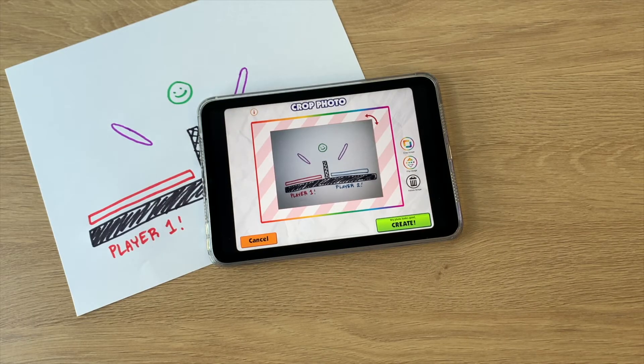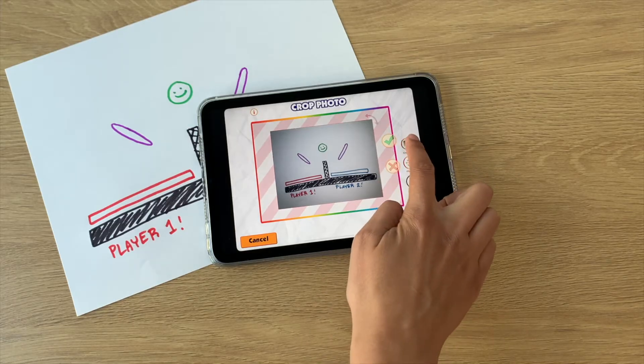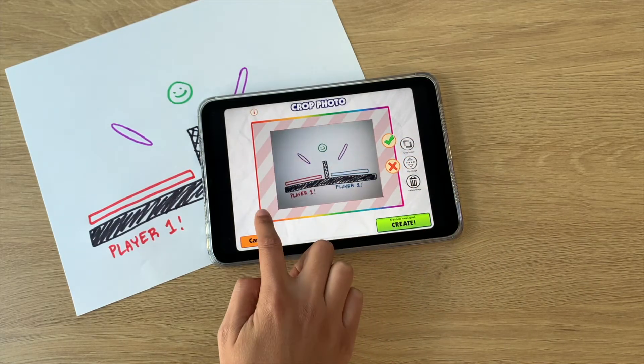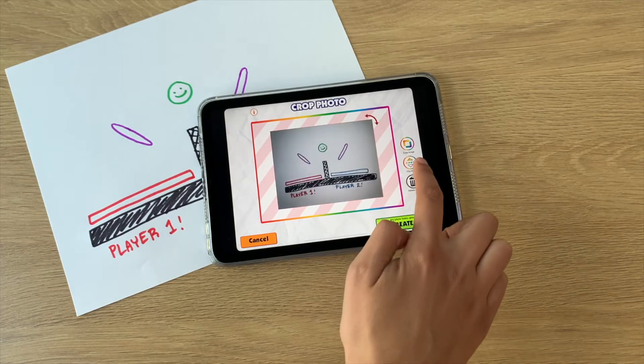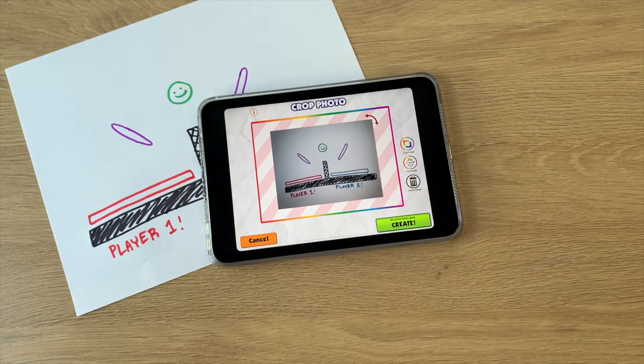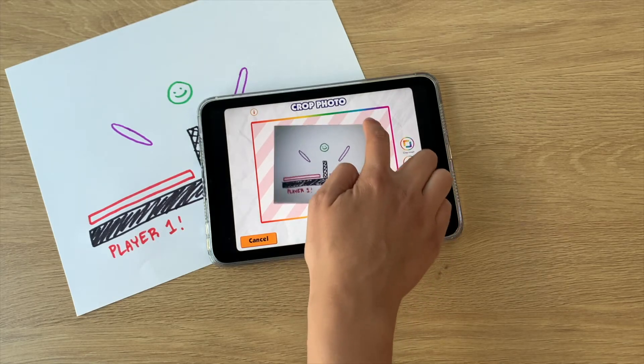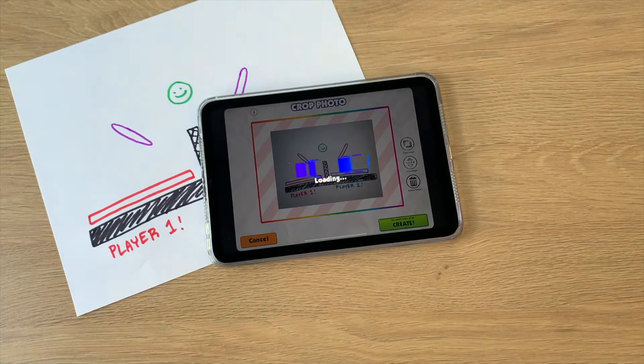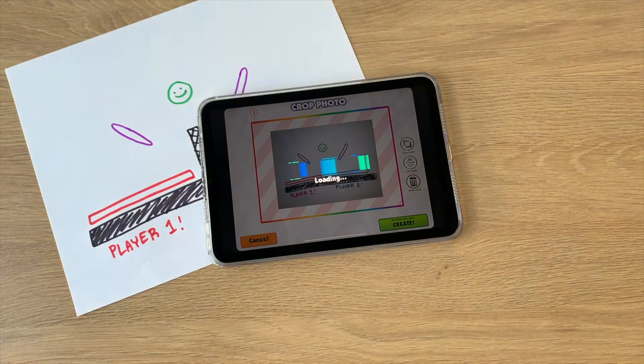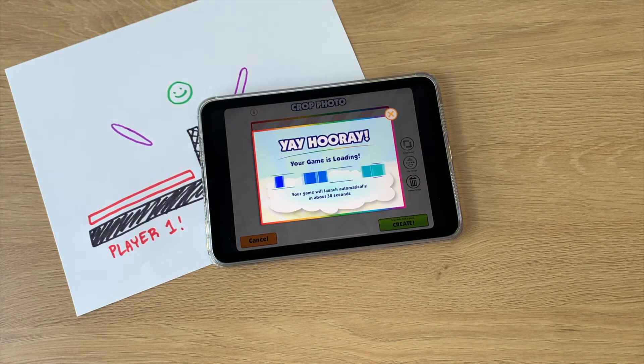Now you are in the photo editor. Here you can crop, flip, and rotate your photo. When you're done editing your photo, click Create to finish uploading your game. It will take about 30 seconds for your game to load.